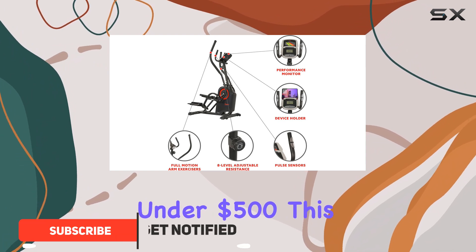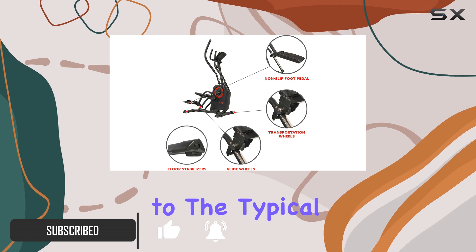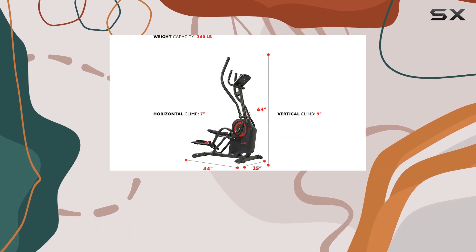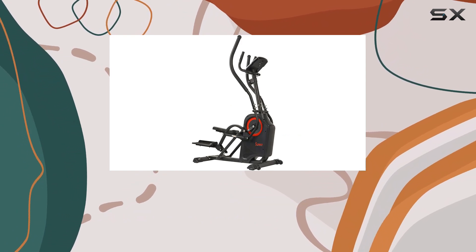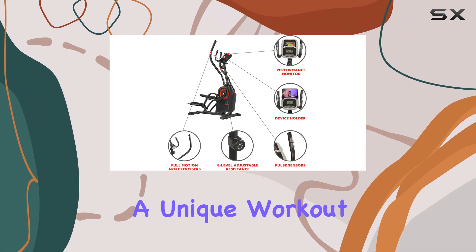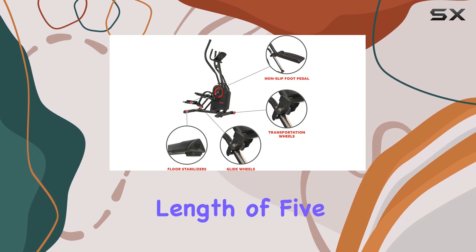Priced at just under $500, this machine offers a remarkable alternative to the typical ellipticals that hover around the $1,200 mark. The Cardio Climber is both a strider and a climber, allowing you to experience a unique workout that combines a vertical height of 9 inches with a stride length of 5 inches.